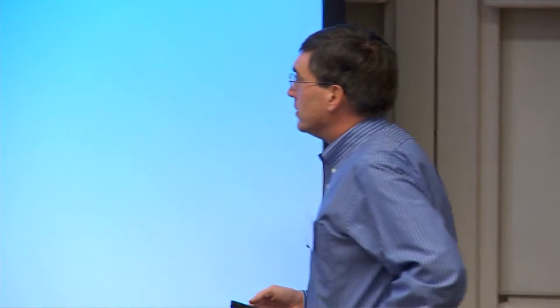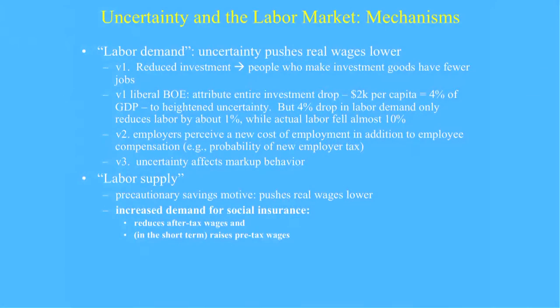There's a second version of the labor demand channel, that uncertainty creates a cost, maybe a perceived cost, maybe an actual cost of employment over and above the compensation. Obviously you've got to pay people to work, but over and above that, employers maybe perceive some costs so they hire less. That would be another downward wage pressure story. The third version, we saw today, uncertainty affecting markup behavior. All those have in common, they're pushing real wages downward.